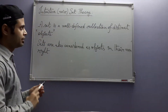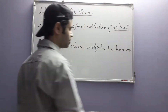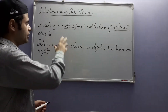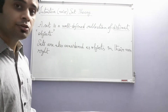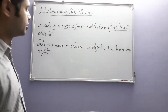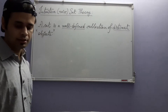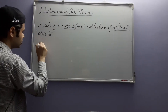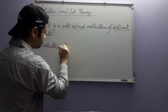But let us first decipher this definition — what does it actually mean, and what is the meaning of 'well-defined' and 'distinct'? We of course know what well-defined and distinct mean, but how do they shape this definition? What sort of collections ultimately get to be sets when we restrict them using these conditions?